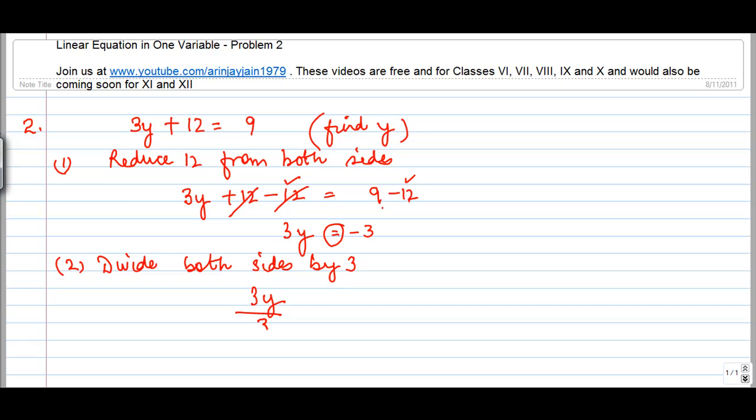I get 3y divided by 3 is equal to minus 3 divided by 3. This 3 goes off here, this 3 goes off here. What I get is minus 1. In my equation, y is equal to minus 1.